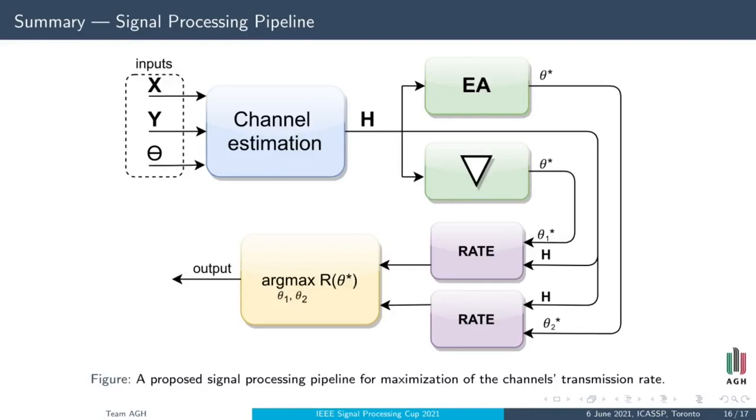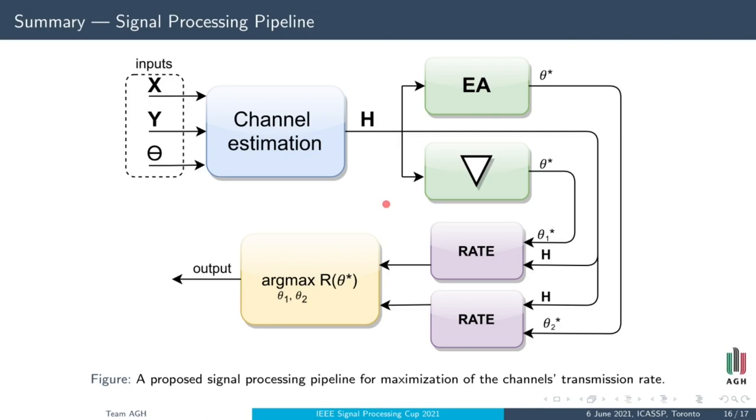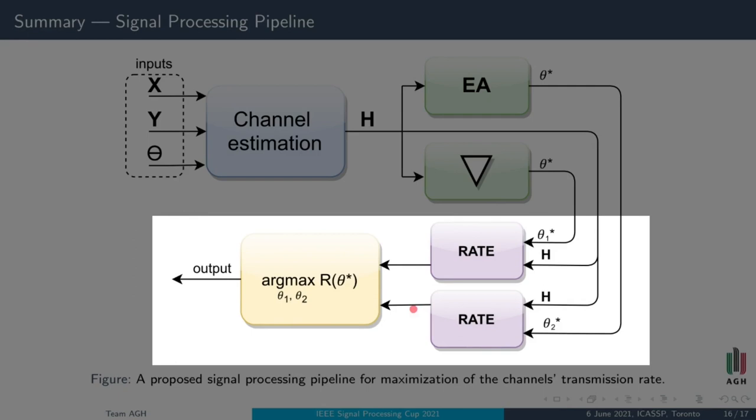Our approach is summarized on the block diagram that represents the way information from the dataset outputs the proposed solution. Blue block symbolizes the non-linear estimator of the channels which we presented. Furthermore, there are two independent methods that are trying to find the best IRS configuration. In the end, using estimated channels and noise, we compute the transmission rates for both configurations and select a better one.